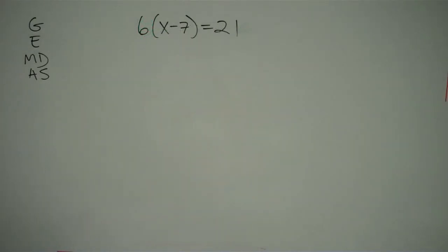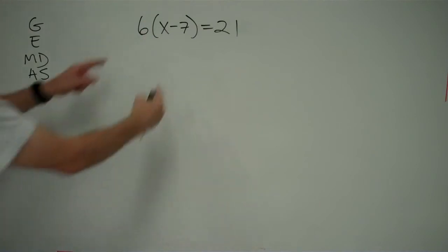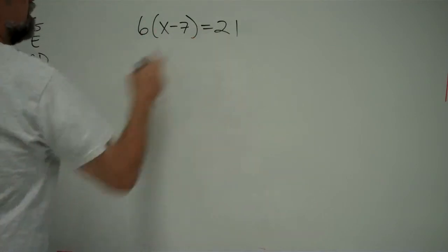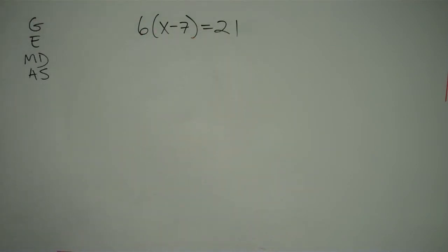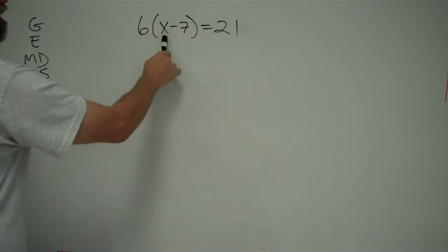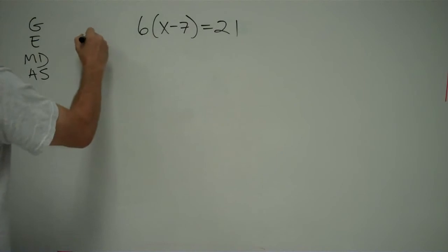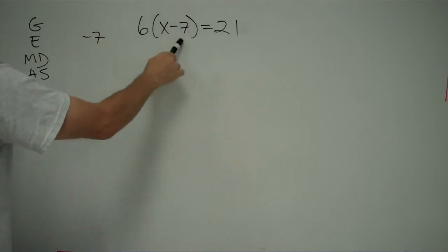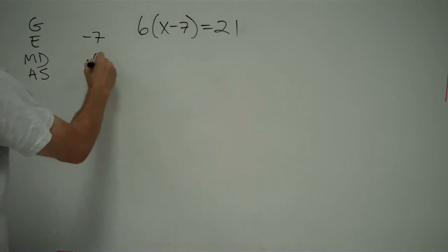Let's look at another one. This time we have 6 times, in parentheses, x minus 7 equals 21. So we ask ourselves, what's happening to our unknown? First thing happening to the unknown is we're subtracting 7, minus 7. The second thing happening after we subtract 7 is we multiply by 6.